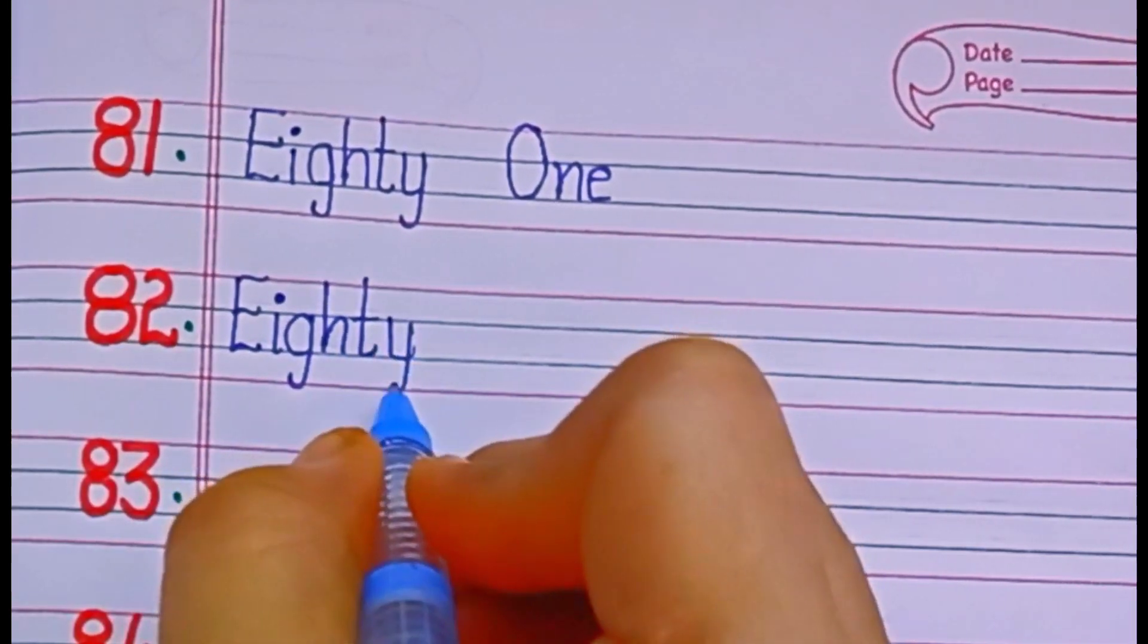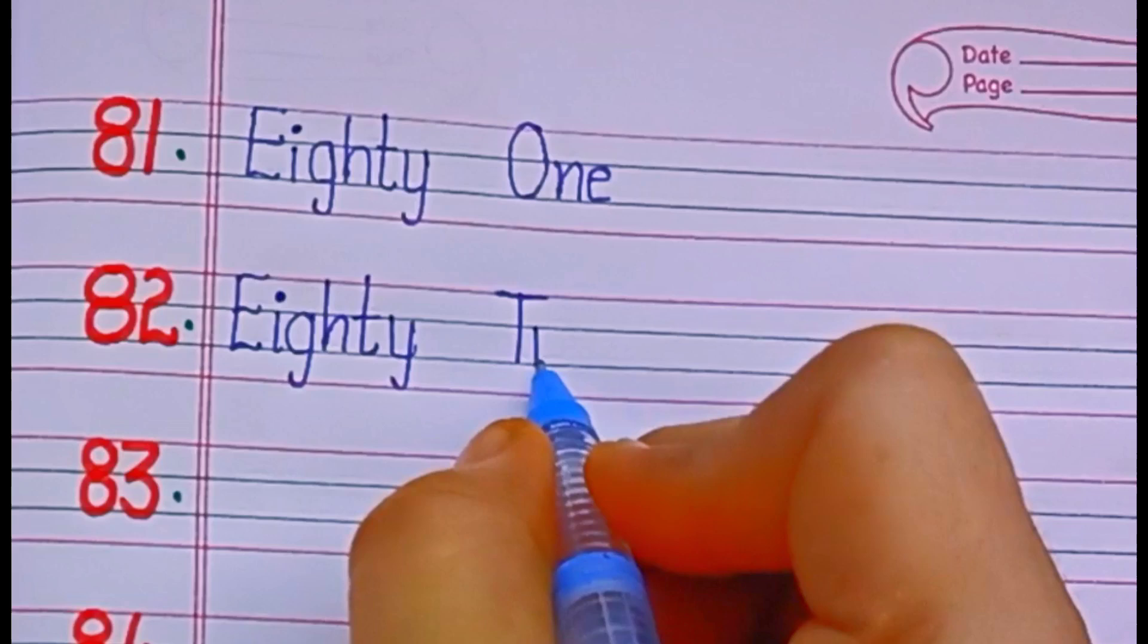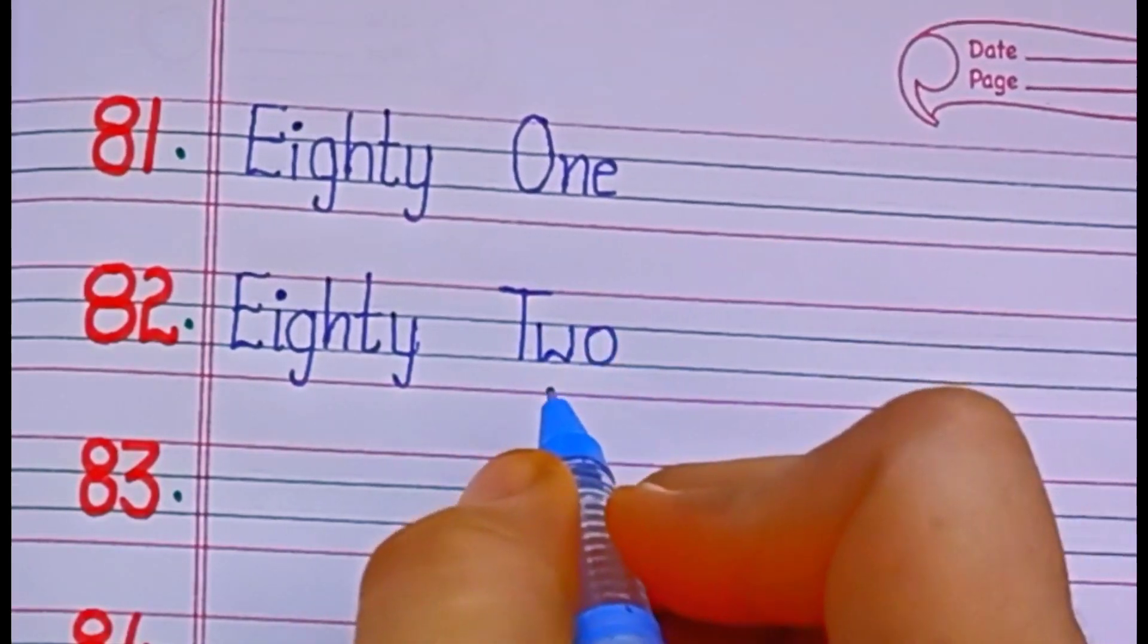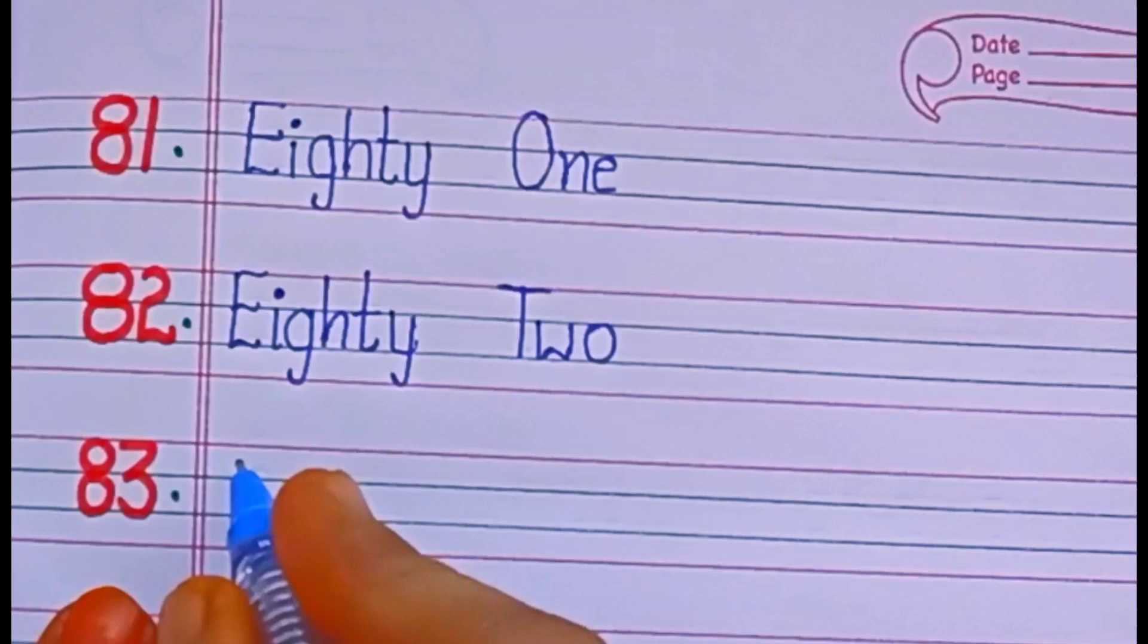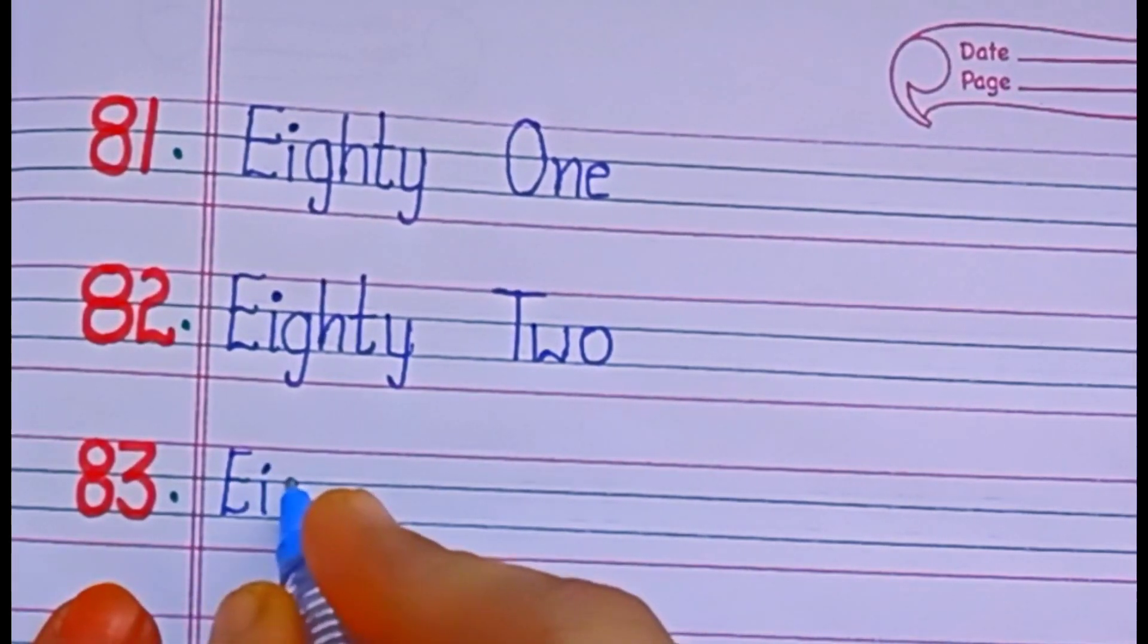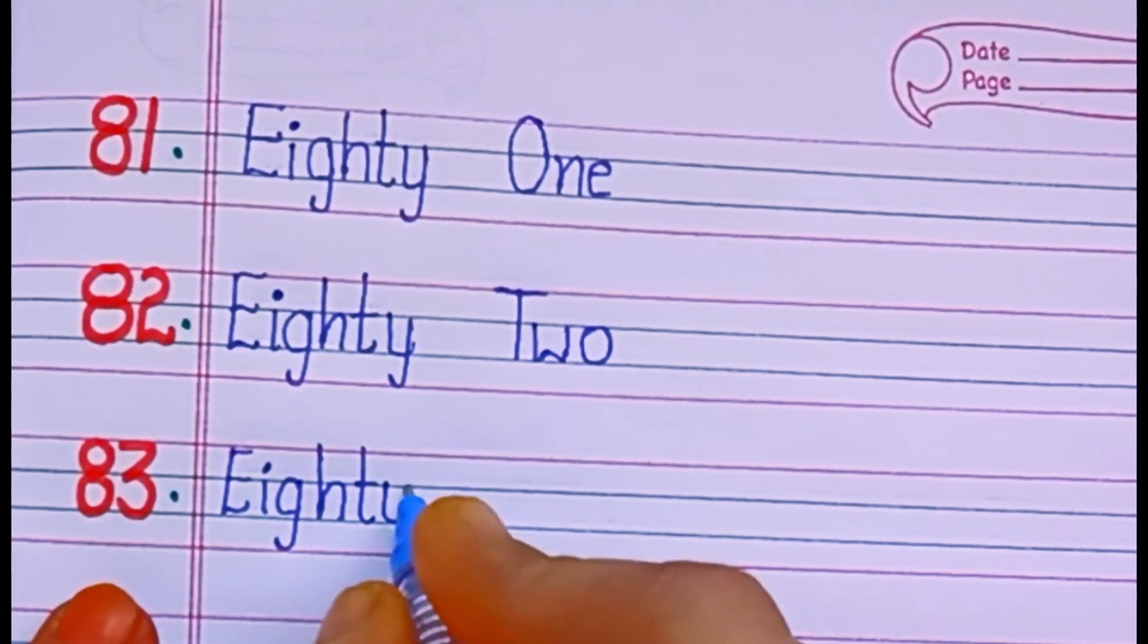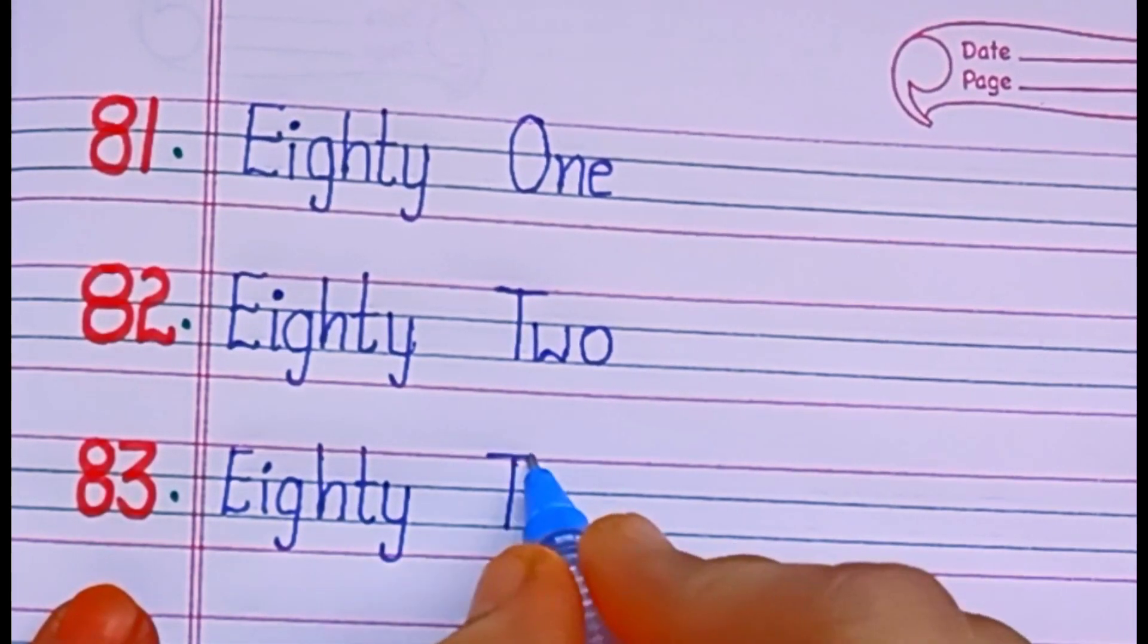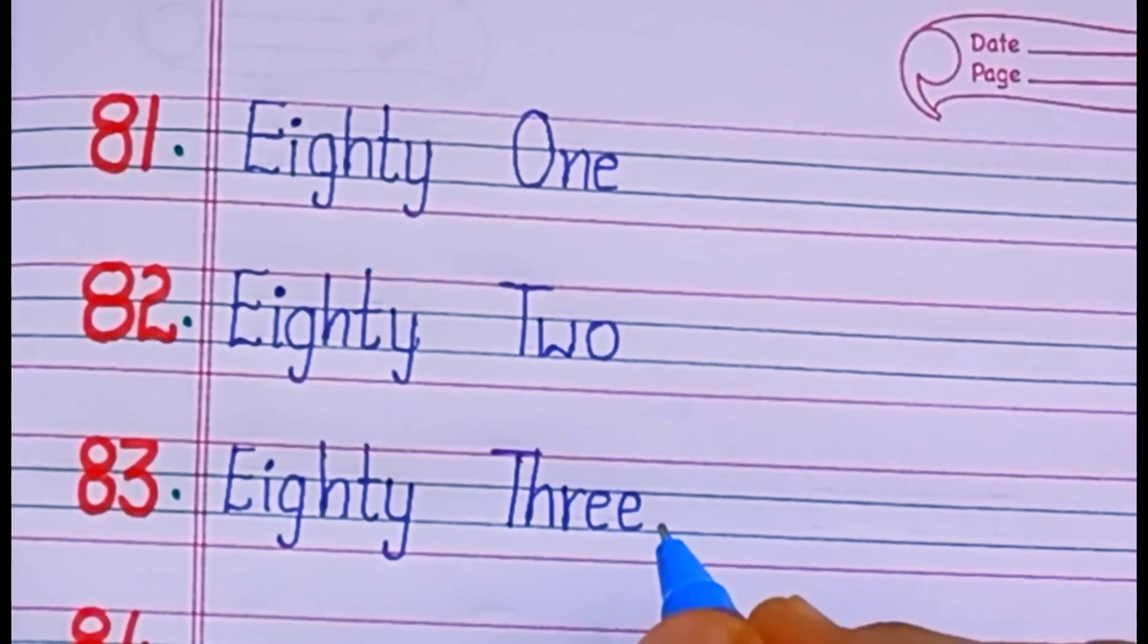E-I-G-H-T-Y, eighty. O-N-E, one. Eighty-one. E-I-G-H-T-Y, eighty. T-W-O, two. Eighty-two. E-I-G-H-T-Y, eighty. T-H-R-E-E, three. Eighty-three.